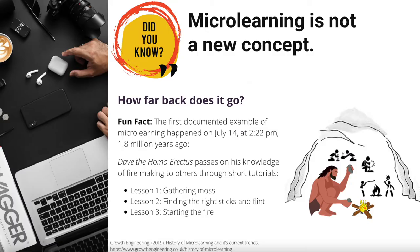Did you know that microlearning is not a new concept? One of the questions we often get is, how far back does it go? Fun fact: the first documented example of microlearning happened on July 14th at 2:22 p.m. 1.8 million years ago. Growth Engineering, an online learning company based in the UK, humorously documented the first example of microlearning as Dave the Homo erectus, passing on his knowledge to others through short tutorials.